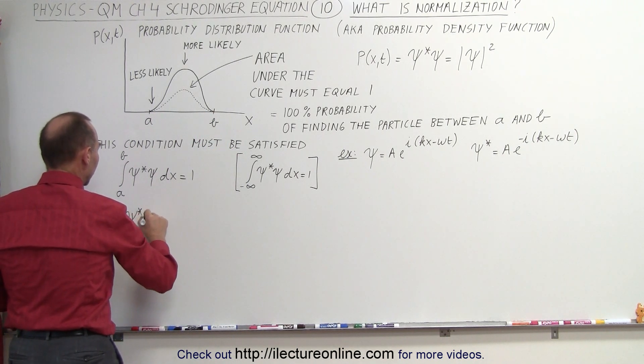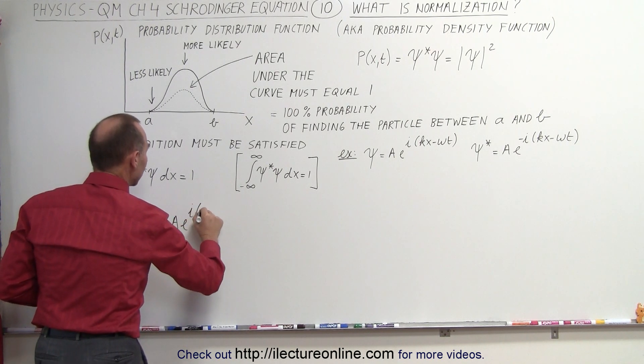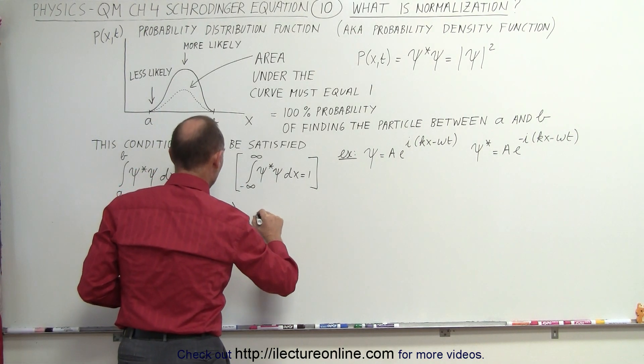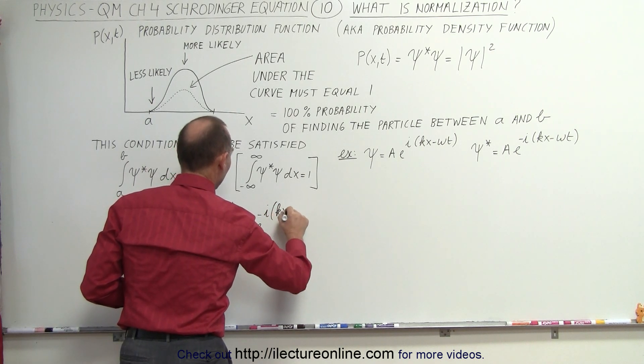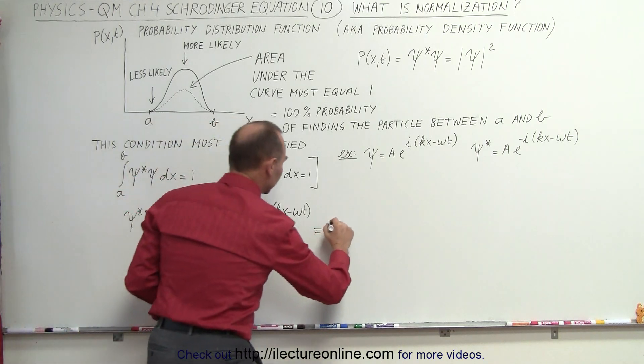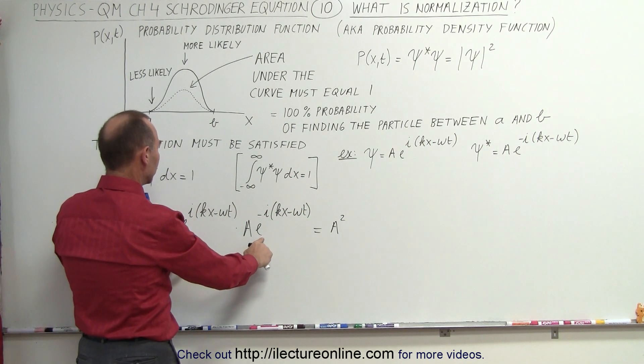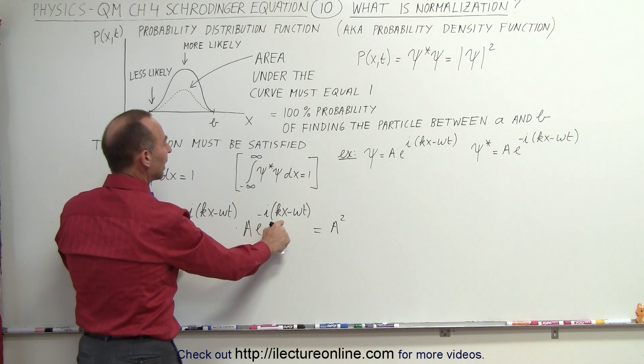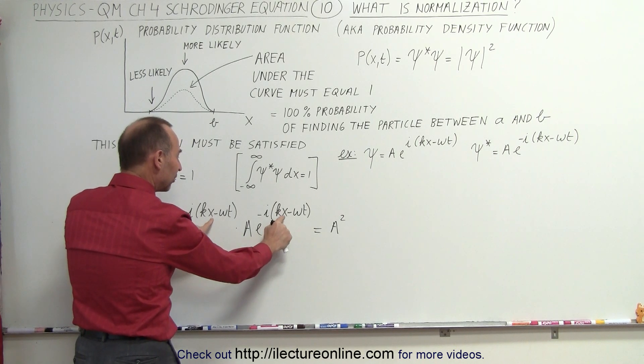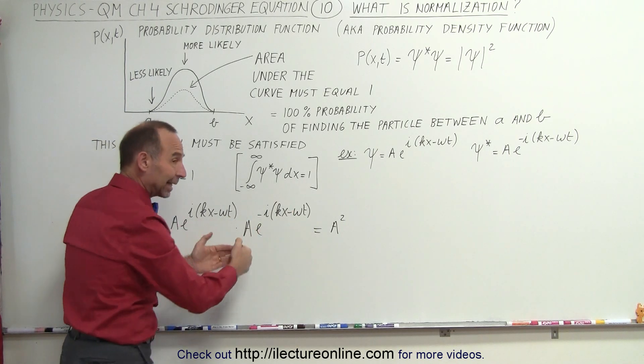So we have the wave function multiplied by its complex conjugate. That's going to be a times e to the i kx minus omega t multiplied times a e to the minus i times kx minus omega t. And so when we multiply this together, we have a times a, which gives us a squared. But now we have the exponential number i kx minus omega t and minus i kx minus omega t. And if we multiply this together, the bases are the same, we add the exponents. And when we add the exponents, we realize they cancel out.